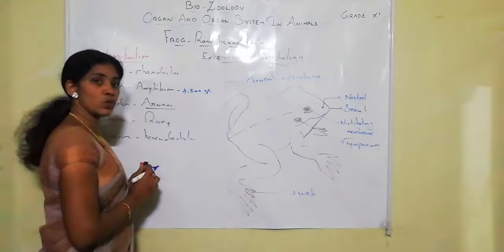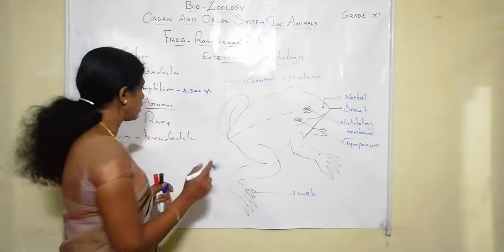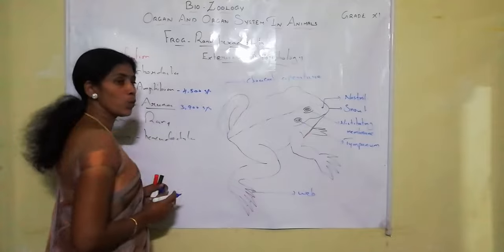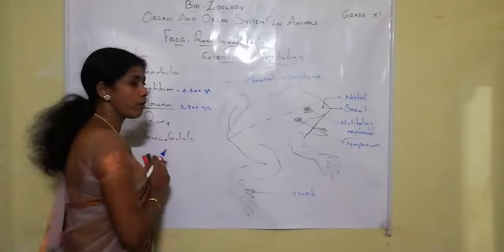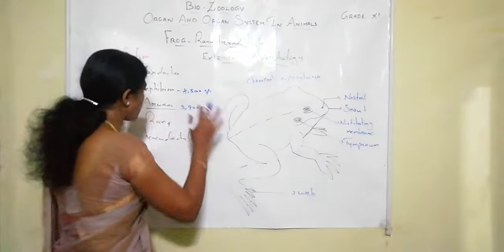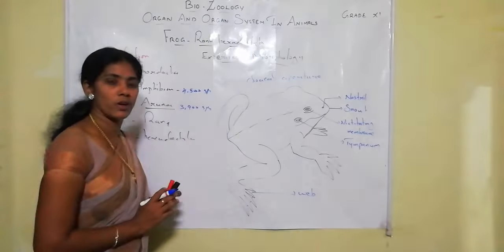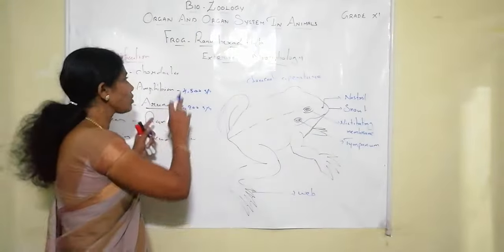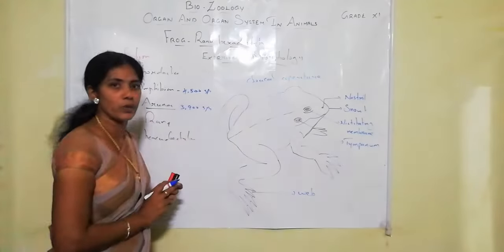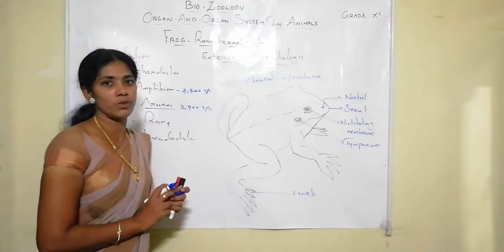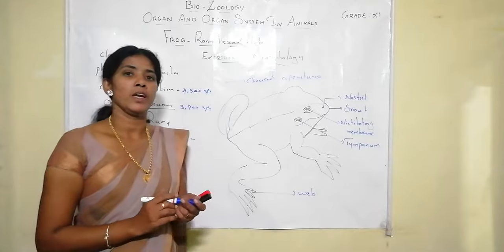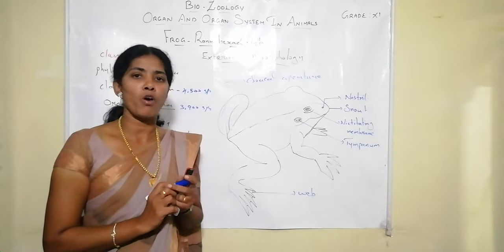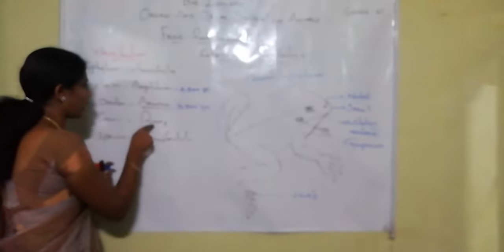The order Anura is part of amphibians, which consists of 4,500 species overall. Among these, 3,900 species belong to the order Anura, which includes frogs and toads. Today we will elaborately discuss the morphological as well as anatomical features of the frog, Rana hexadactyla.